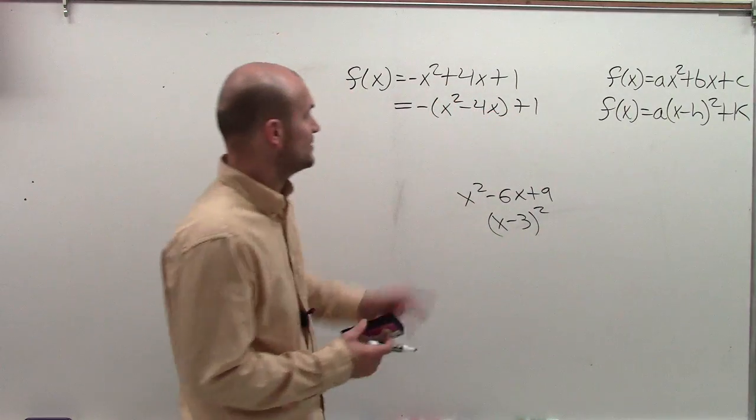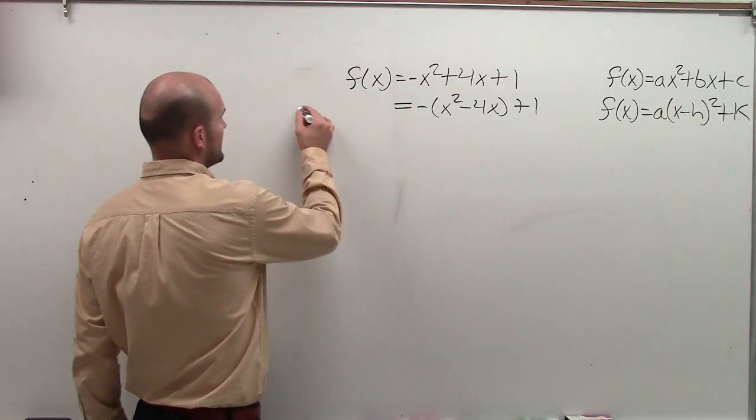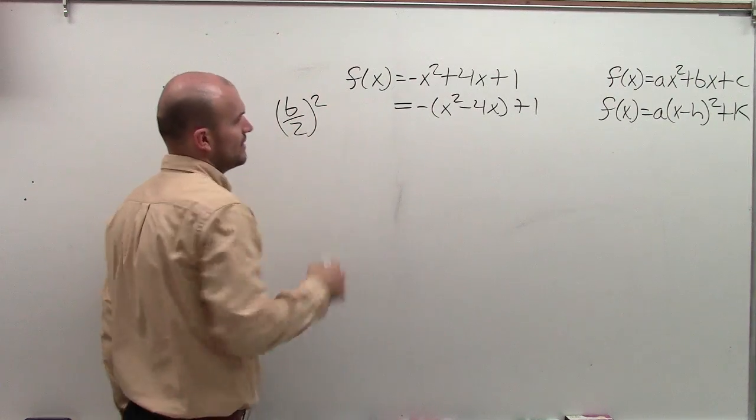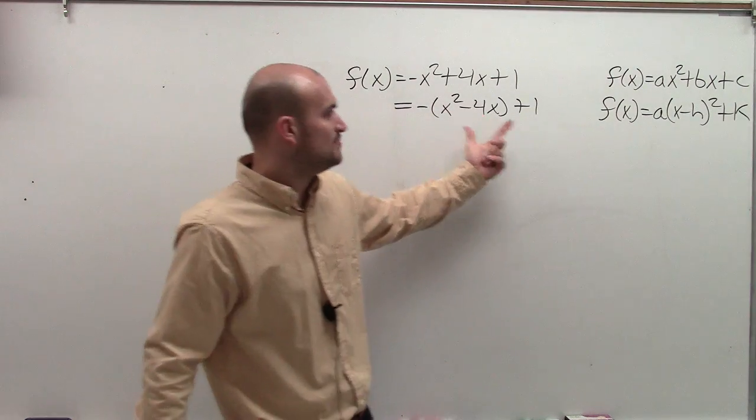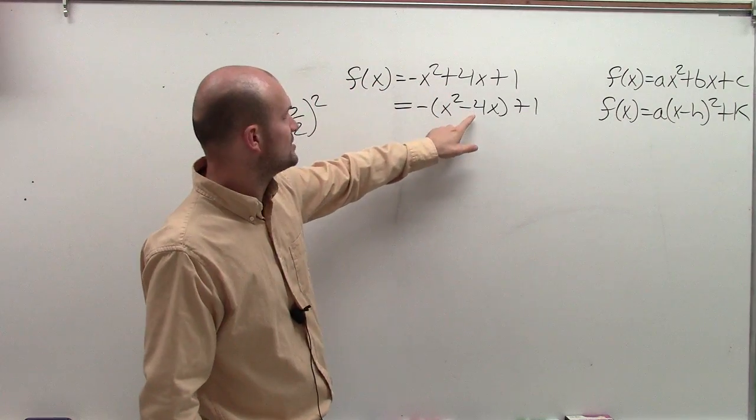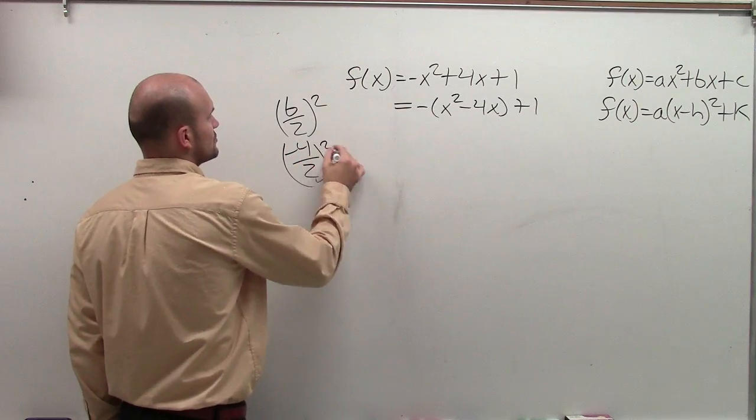So what I need to do is I need to look at how am I going to create this to be a perfect square trinomial. The process for that is to take b divided by 2 and square it. So I need to look at this. And remember, b is your coefficient of your linear term. So I take my b, which is negative 4 divided by 2 and square it. Negative 4 divided by 2 squared.